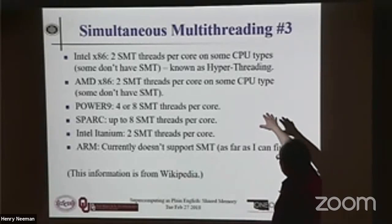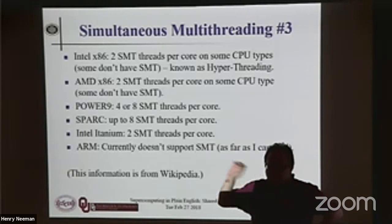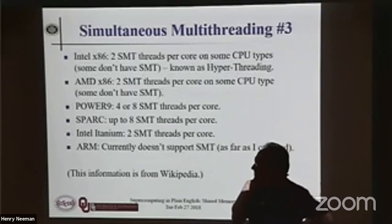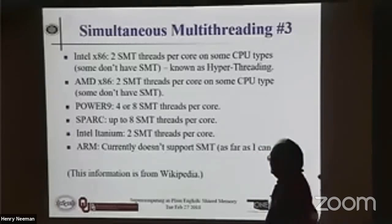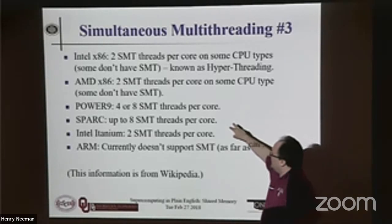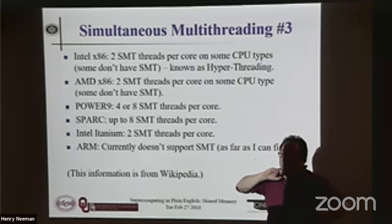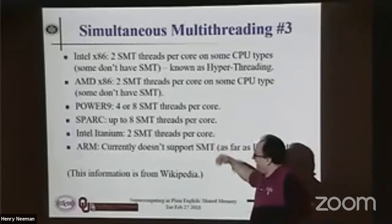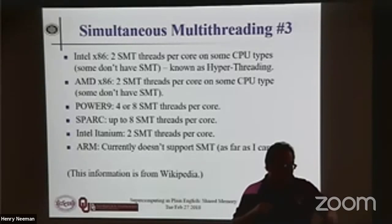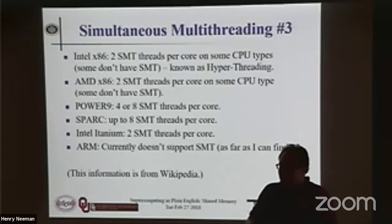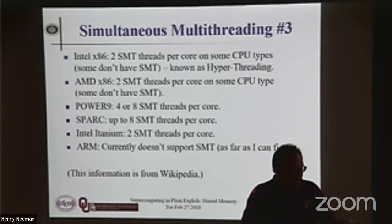To give some concrete numbers: Intel and AMD x86 chips — many of them, certainly the server chips — have two simultaneous multi-threads per core. Power chips get four or eight per core. SPARC is up to eight, depending on which model. Intel Itanium is two per core. ARM doesn't support simultaneous multi-threading at all, as far as I've been able to find, although there are discussions of adding it in the future.